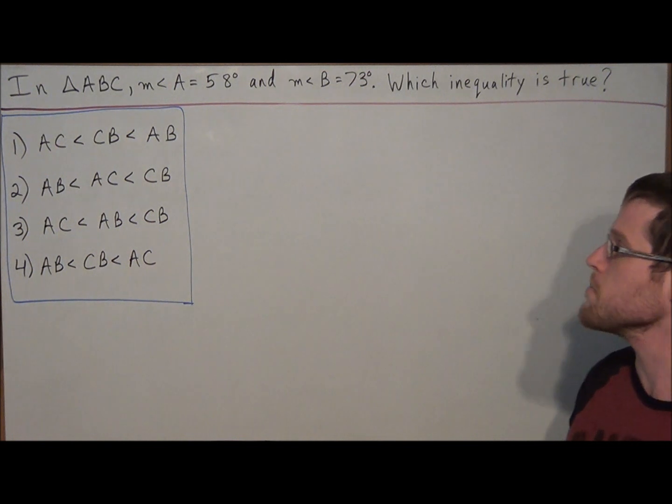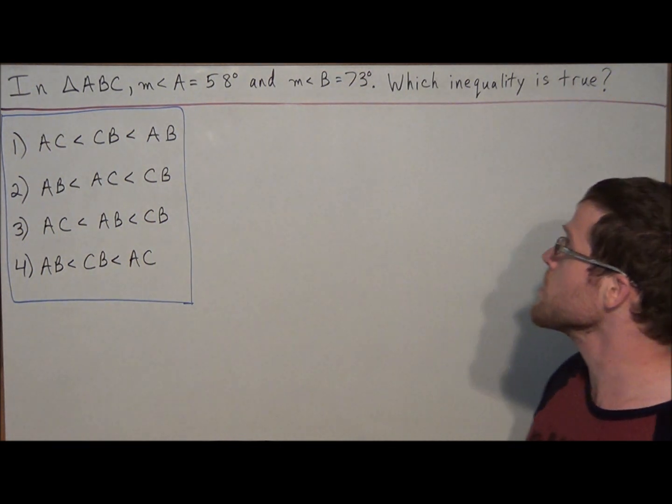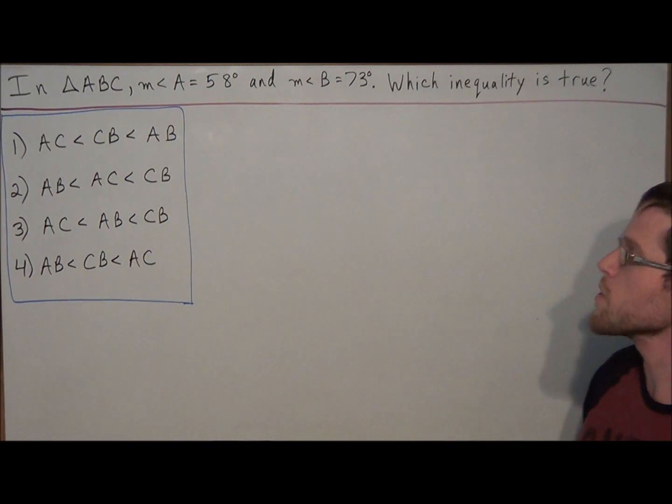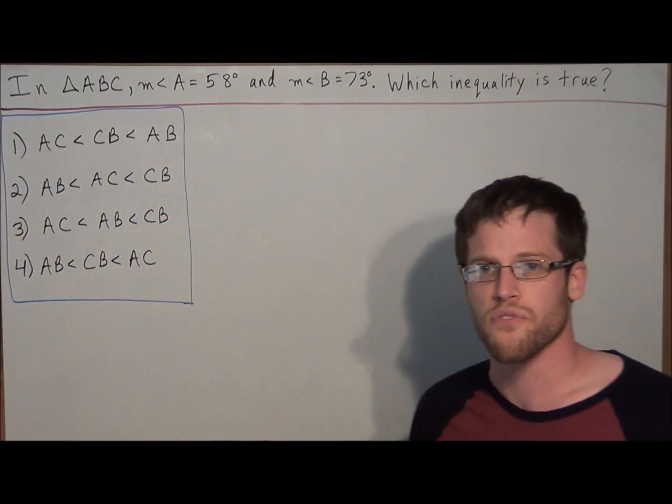So we have in triangle ABC the measure of angle A equals 58 degrees and the measure of angle B equals 73 degrees. And we want to know which inequality is true and we have four inequalities to choose from.